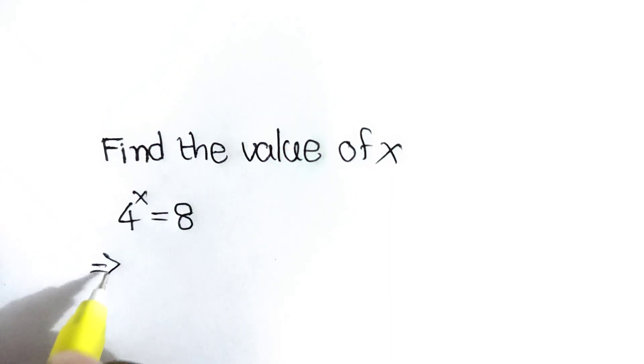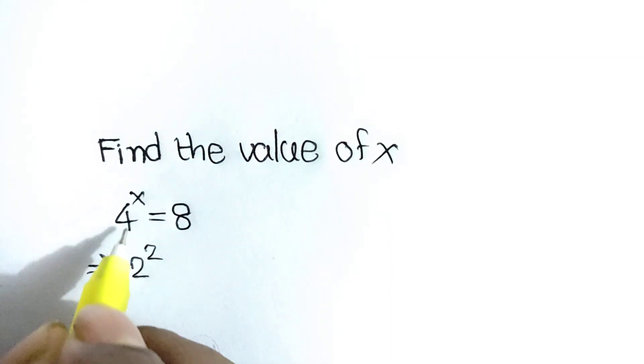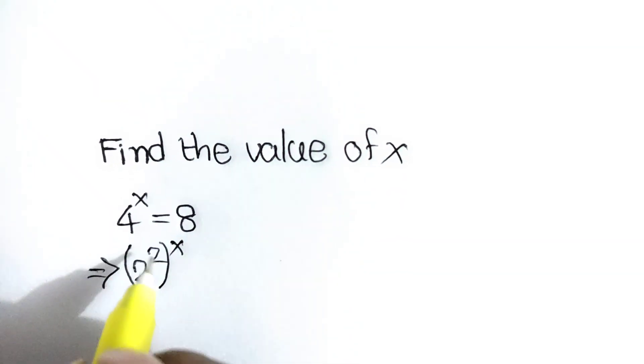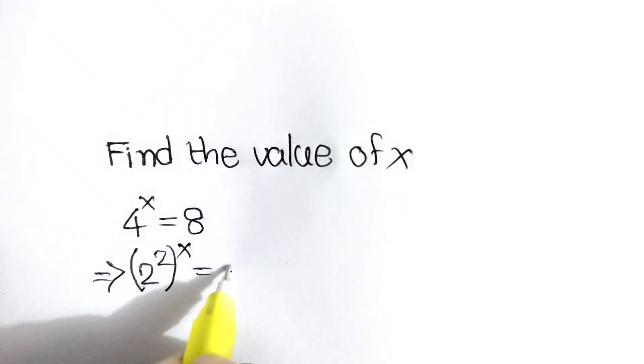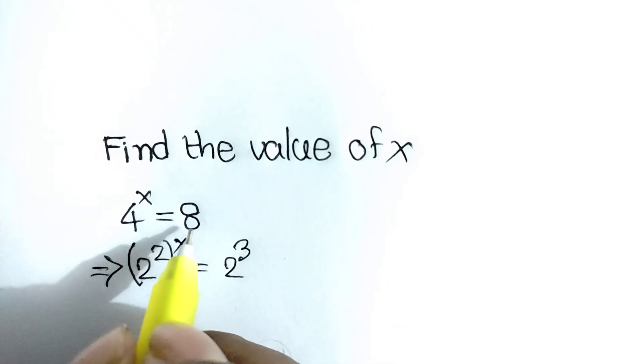Next step, we can write 2 to the power 2, because 2 to the power 2 is 4. Bracket x is equal to 2 to the power 3, because 2 to the power 3 is the same as 8.